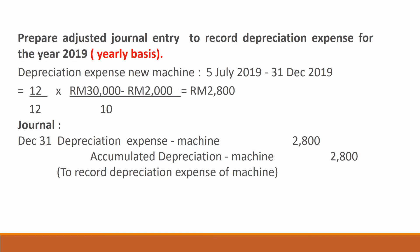Now we prepare the adjusted journal entry to record depreciation expense for year 2019 on a yearly basis. For the new machine purchased 5th July 2019, since we use yearly basis we calculate a full year for the date of purchase: 12/12 × (RM 30,000 − RM 2,000) ÷ 10 years = RM 2,800. The journal entry is: debit depreciation expense RM 2,800 and credit accumulated depreciation of new machine RM 2,800.